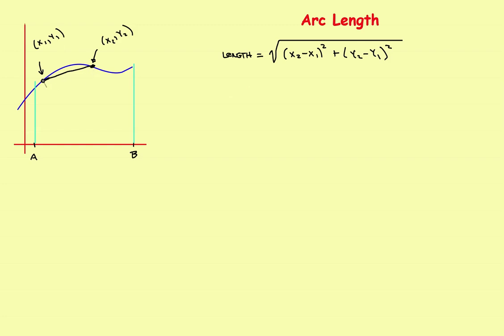We can simplify this. Draw horizontal and vertical lines: this distance is delta x (the change in x), and this distance is delta y (the change in y). Substituting back into the formula, the length equals the square root of delta x squared plus delta y squared.